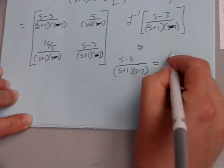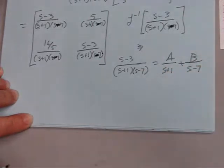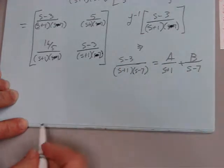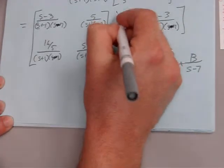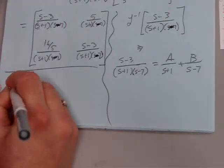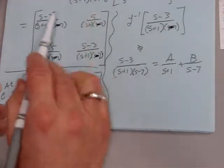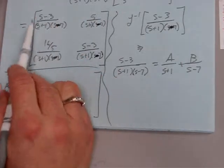It's going to be some A over s plus 1 plus some B over s minus 7, and I'll let you do some of the work, so I'm not going to carry this out. But once we do the inverse Laplace transform then, e to the At, our solution, we take inverse Laplace transform element by element.